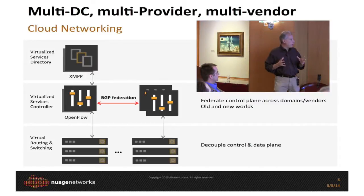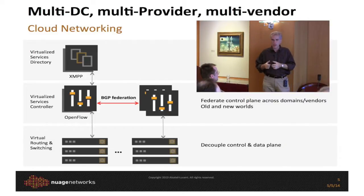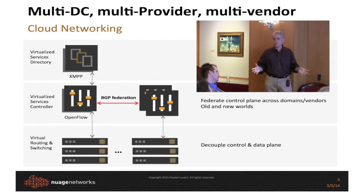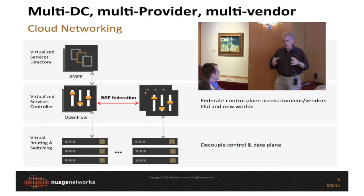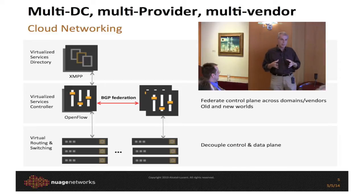The VRS is one forwarding element in every hypervisor. A controller is responsible for a subset of those hypervisors. You can think of it like a big physical router: we pulled the control plane out and made it a virtual machine, and instead of line cards, we have virtual switches. The controllers federate together using multi-protocol BGP, allowing us to build larger and larger clusters. Our scalability is limited by how much BGP can scale — numbers in the millions of routes and millions of virtual machines.